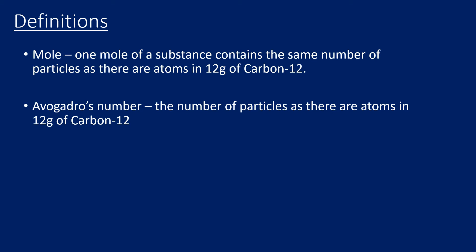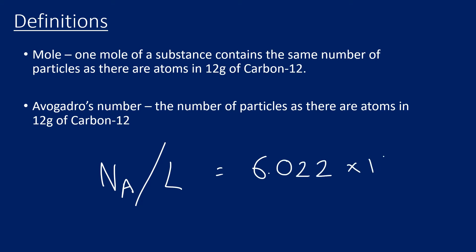Starting off with some definitions: the mole often comes with a bit of confusion from GCSE. Ultimately, the mole is just a number — it's a way of measuring things. One mole of a substance contains the same number of particles as there are atoms in 12 grams of carbon-12. That number is Avogadro's number, a very large number. Avogadro's constant is given the notation N_A, sometimes L. You do not need to memorize this number; it is supplied in questions.